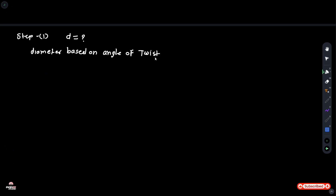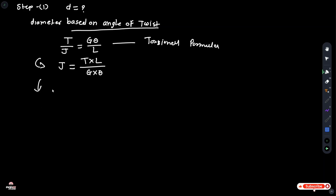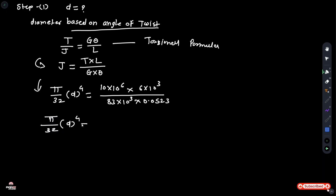To find the diameter based on angle of twist, write down the torsional formula: T divided by J equals G multiplied by theta divided by L. Rearranging to get J equals T multiplied by L divided by G multiplied by theta. Substituting values: pi by 32 multiplied by d raised to 4 equals 10 into 10 raised to 6 multiplied by 6 into 10 raised to 3, divided by 83 into 10 raised to 3 multiplied by theta 0.0523 radians. Solving, pi by 32 times d raised to 4 equals 13.82 into 10 raised to 6.